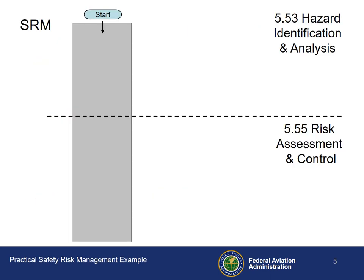In Appendix 1 of AC 120-92, you can find the word description of the SRM process. The objective here is for you to become comfortable with the SRM process as a flow of decision-supporting and decision-making activities, instead of just a list of requirements in which you check the blocks. The SRM workflow follows the five steps of any decision-making process. Step 1 is Design and Context — this is where the System Analysis block fits, as it requires an understanding of the system and environment in which the system exists.